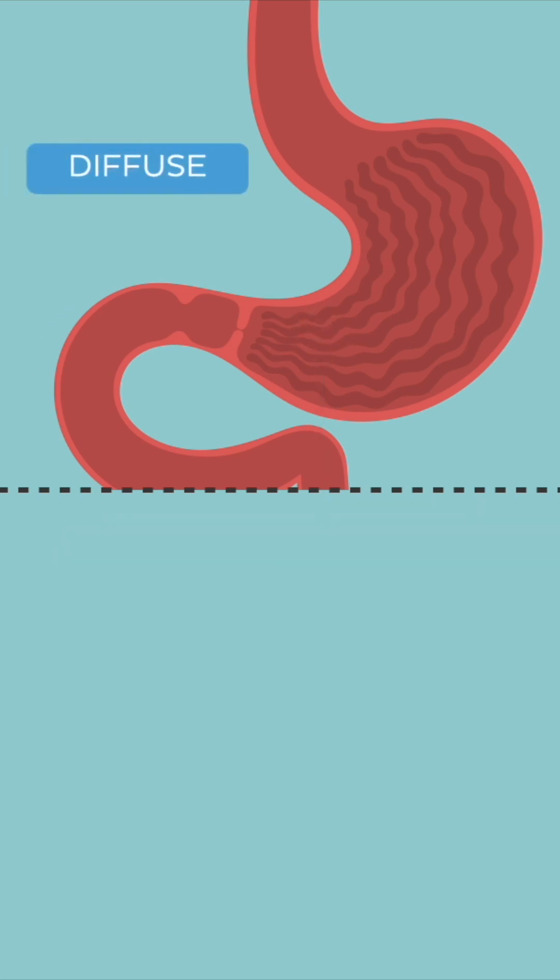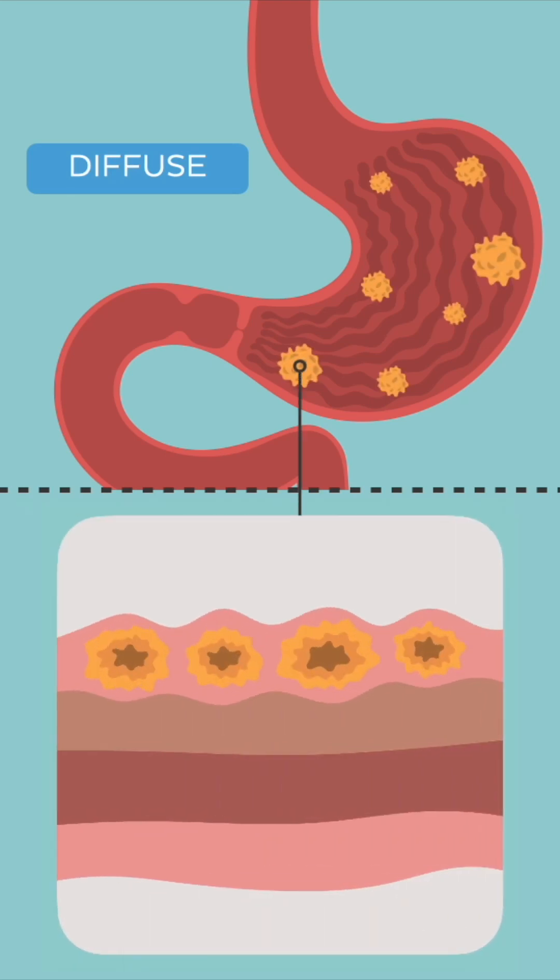The diffuse type is not so centralized, but rather spreads diffusely throughout all parts of the stomach, forming notable masses on the inner lining of the stomach.